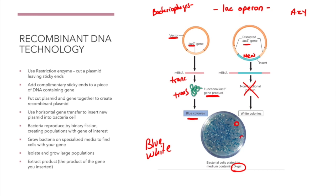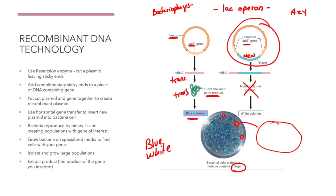If I look on this plate and see white colonies, I can aseptically remove them, grow them in their own agar plate or broth, and I now have a pure culture of bacteria that contain my gene of interest. This is how we differentiate between the cells that took up our new plasmid and those that did not — the cells that have mutated away from normal fermentation because we inserted our gene into the middle of the lac Z gene so it no longer functions.